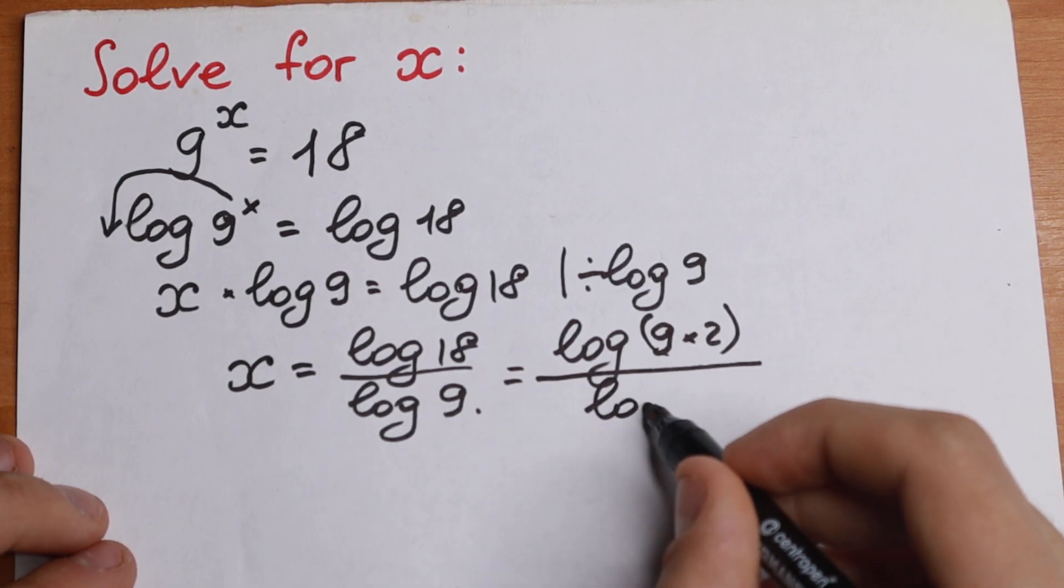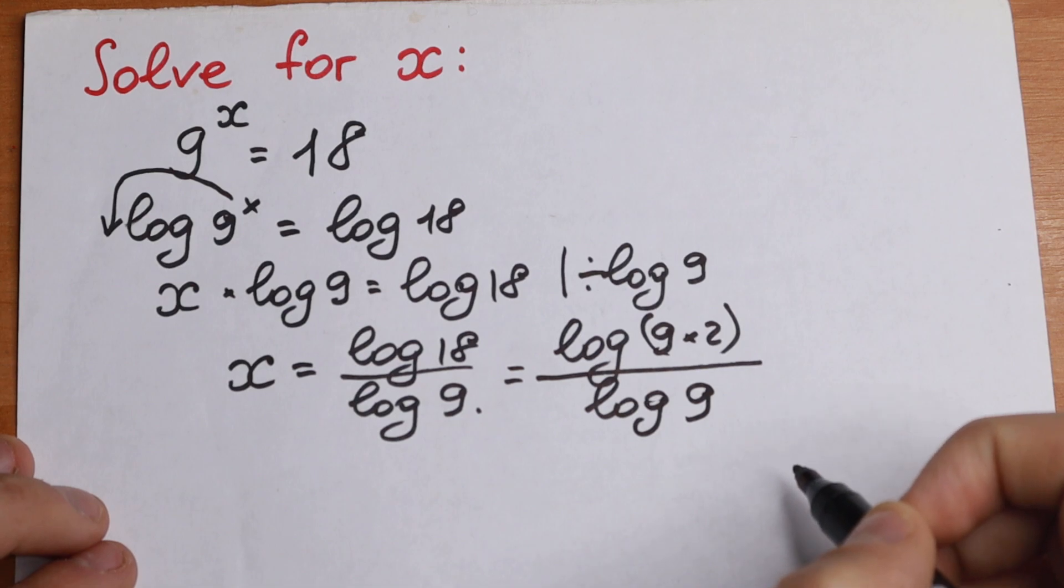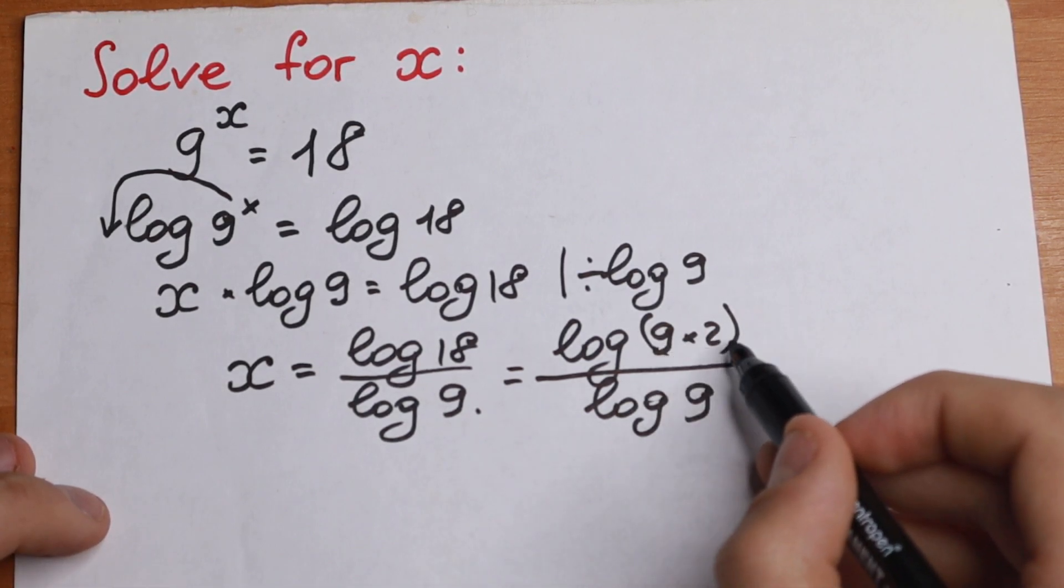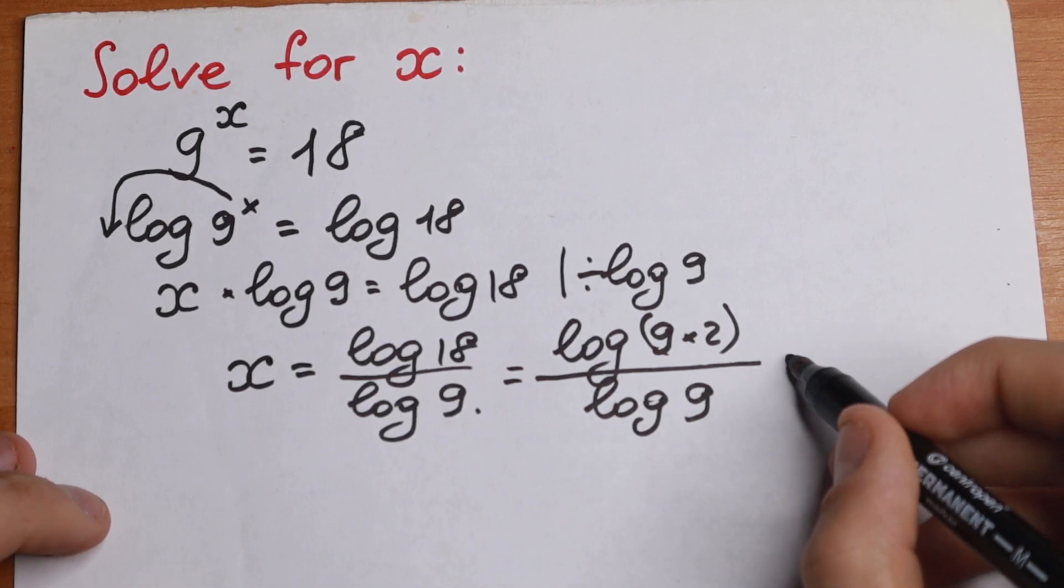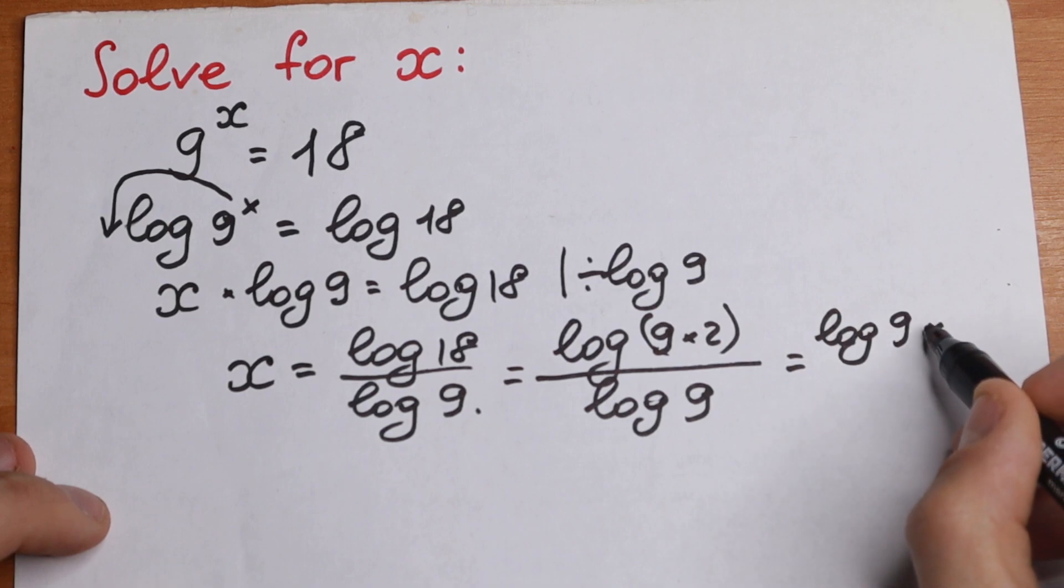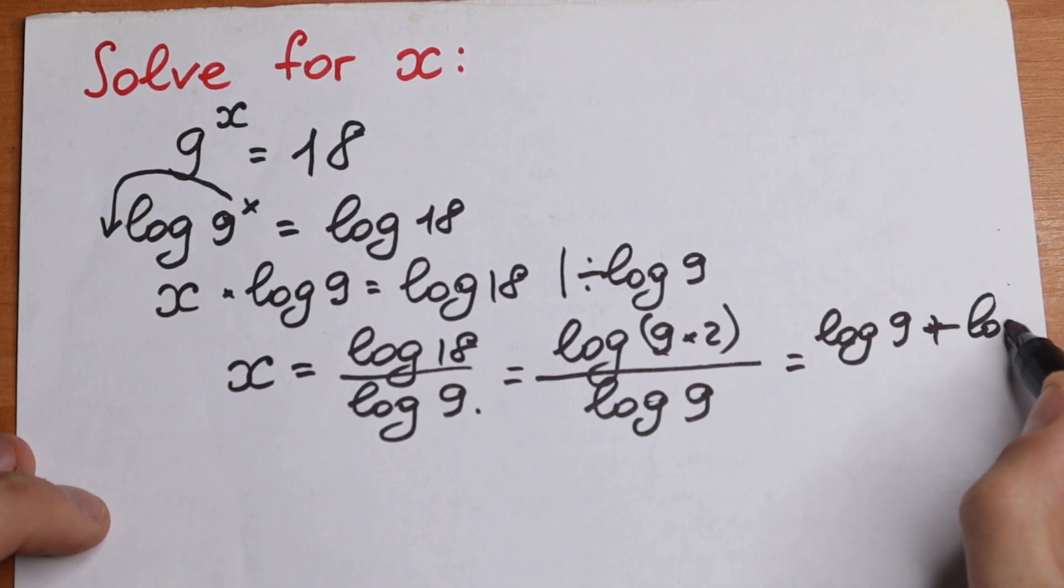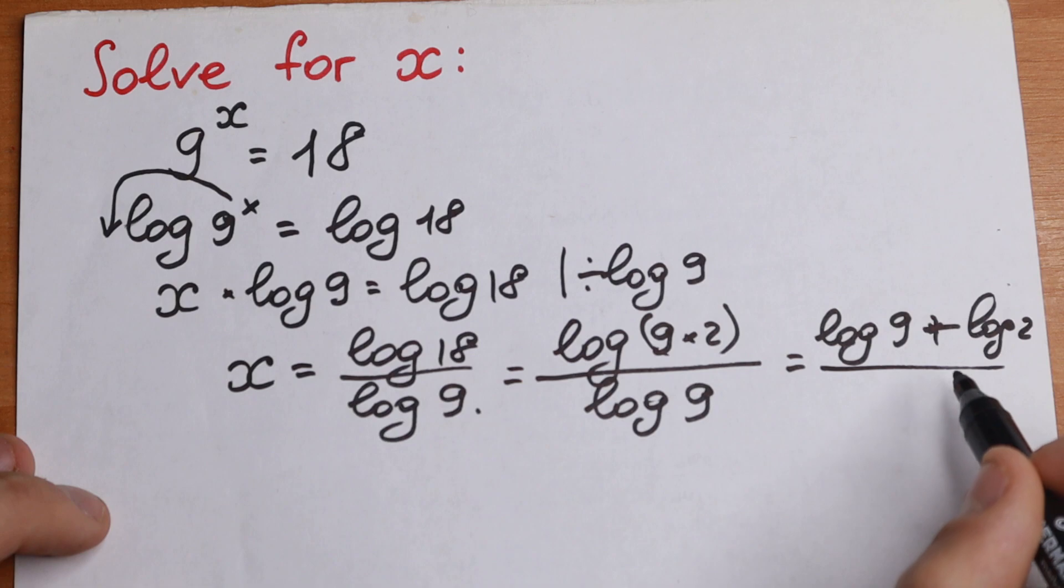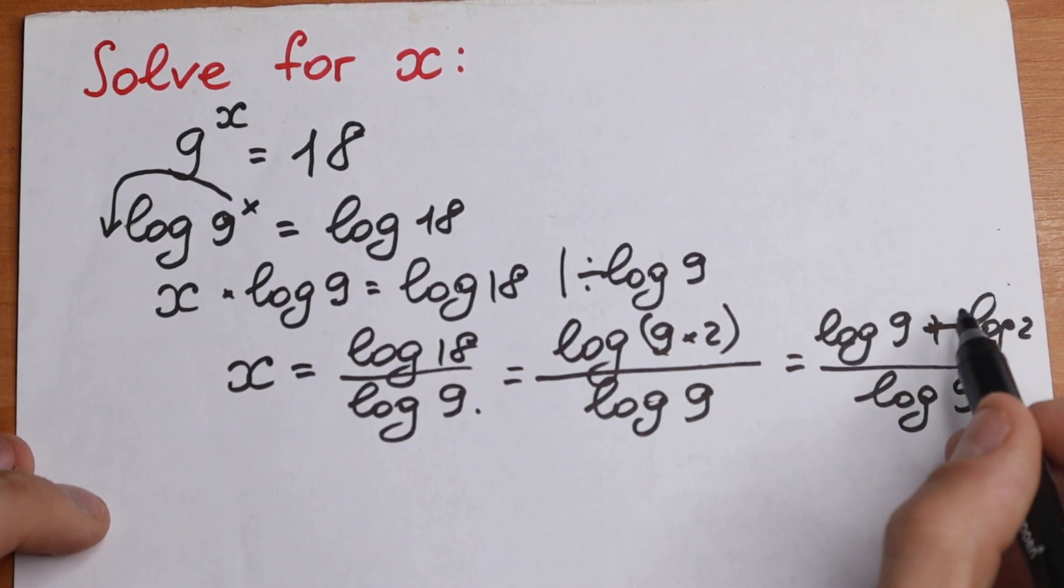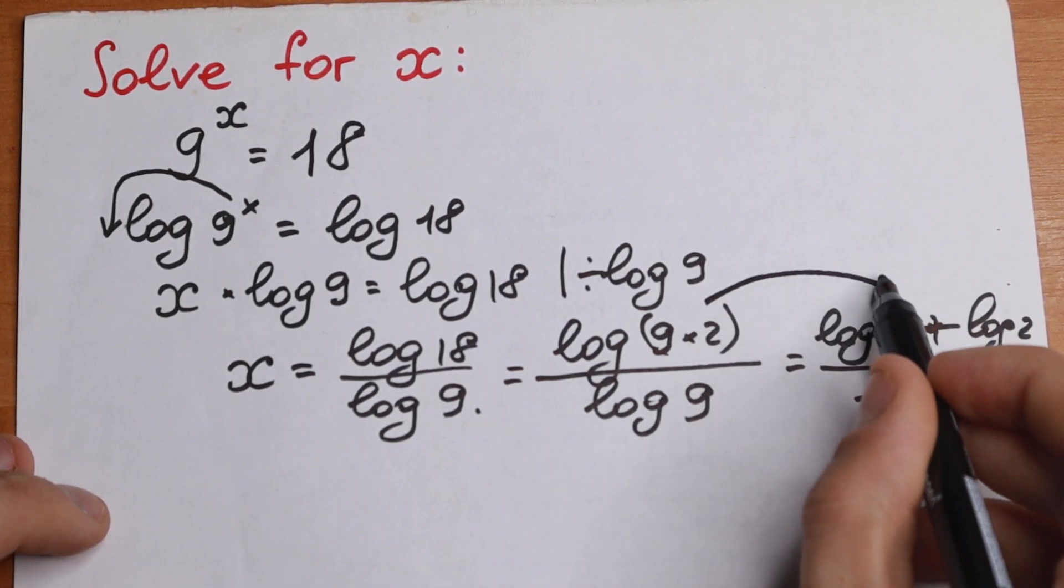And dividing by log 9. So as you can see right here, if we have a product, so we can write it as a sum of 2 logarithms. So we can write in our numerator this log as log 9 plus log 2, and dividing by log 9. So we write this product as a sum of 2 logarithms. So this is our rule.